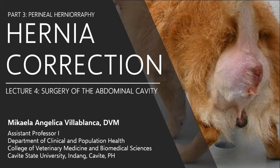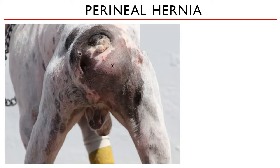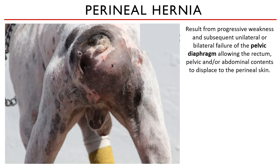In this lecture we will be discussing how to correct a perineal hernia, the last lecture video of this chapter. Perineal hernia is the protrusion of abdominal organs through the pelvic diaphragm. This results from progressive weakness and subsequent unilateral or bilateral failure of the pelvic diaphragm, which is made up of the paired medial coccygeal muscles and the levator ani. This weakness allows the rectum, pelvic, and/or abdominal contents to displace into the perineum.